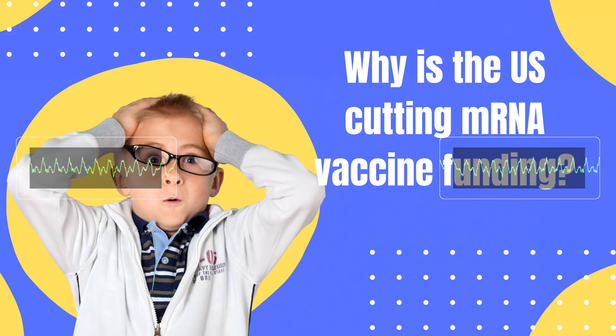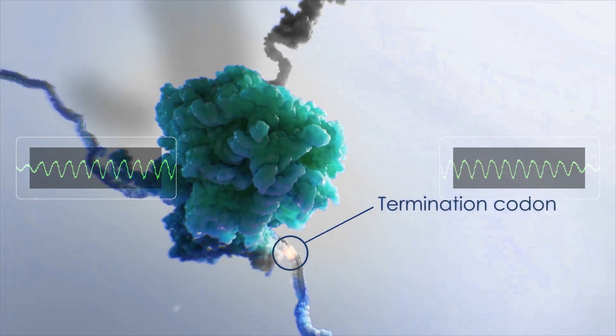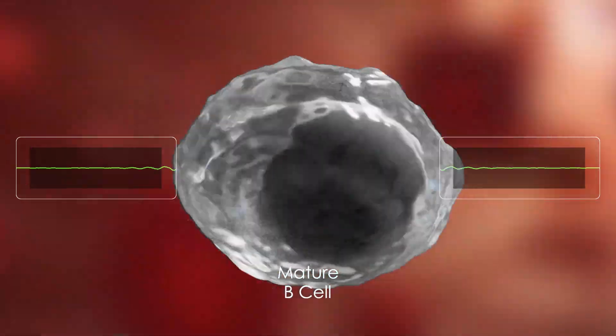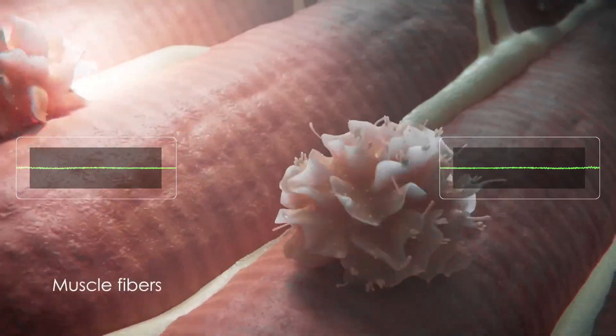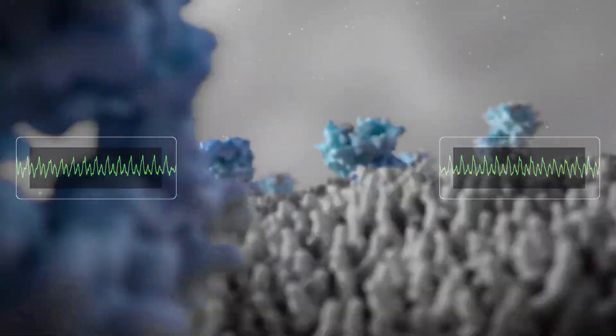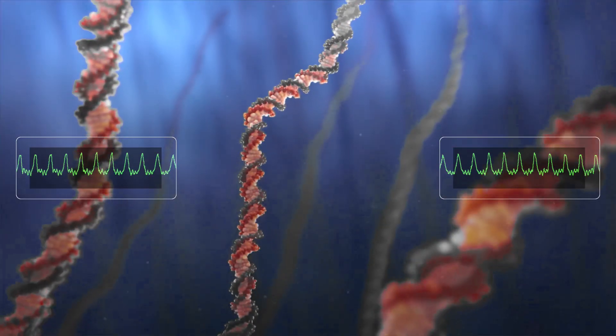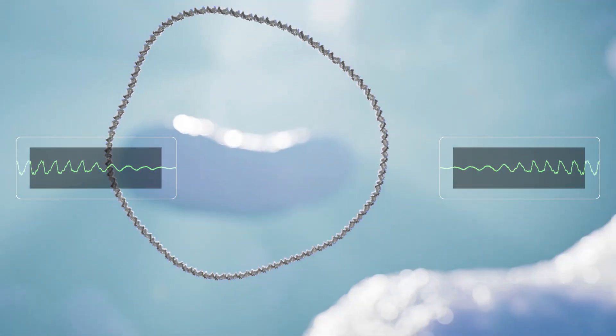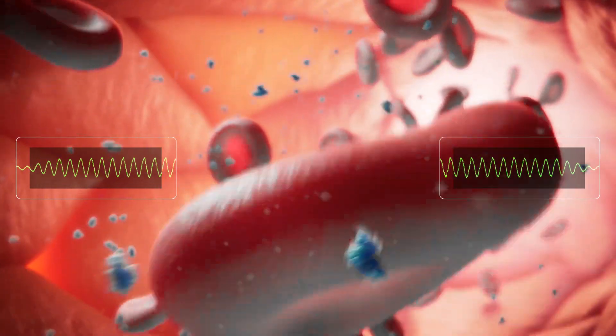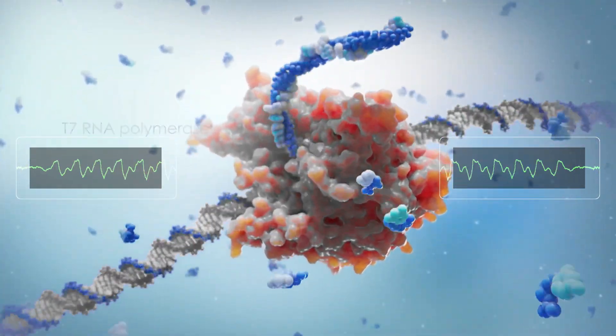Why is the U.S. cutting mRNA vaccine funding? In August 2025, the U.S. Department of Health and Human Services, HHS, canceled around $500 million in mRNA vaccine development under the Biomedical Advanced Research and Development Authority, BARDA. This affects 22 projects, including those for bird flu and cancer.